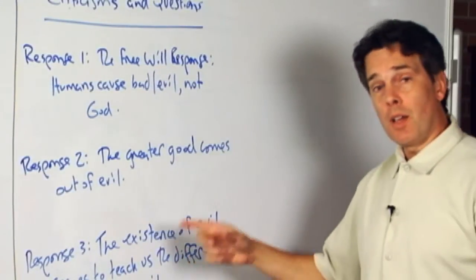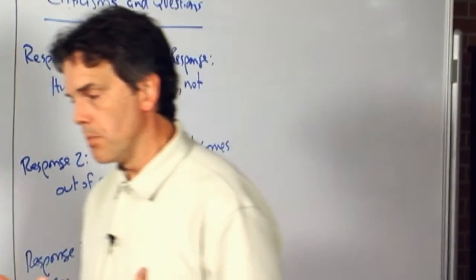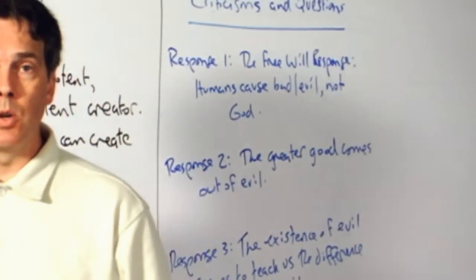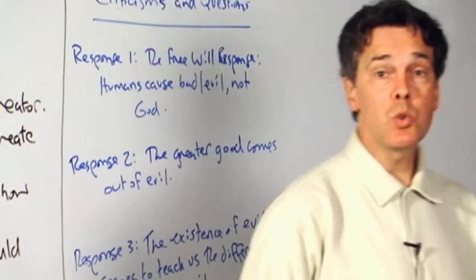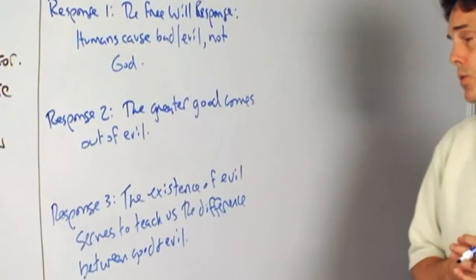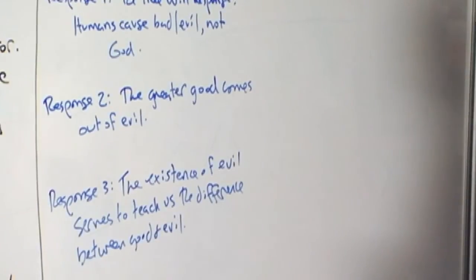And it's our knowing consciously the difference between good and evil that puts us in the position of being moral agents who can choose between the good and evil, and it's only then that if we choose the good, that our choosing the good has great moral significance and makes us more complete and perfect as human beings.